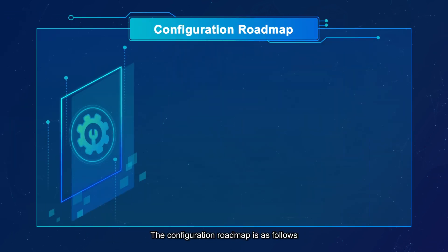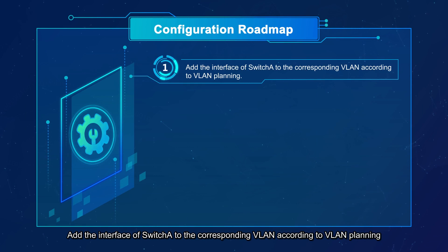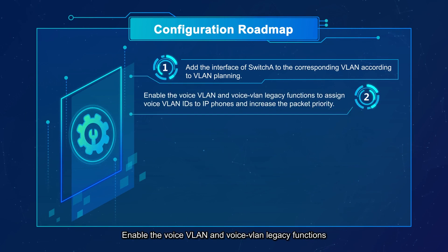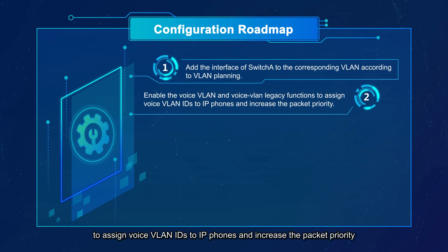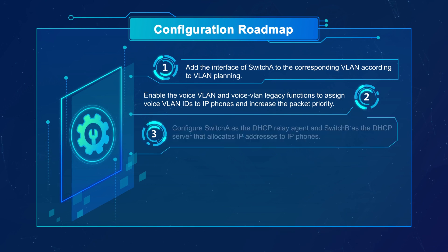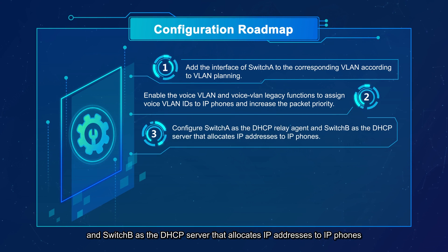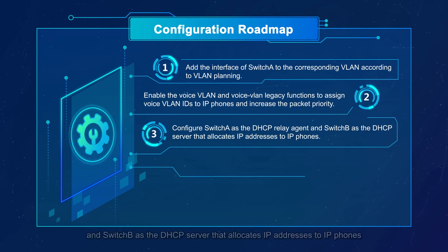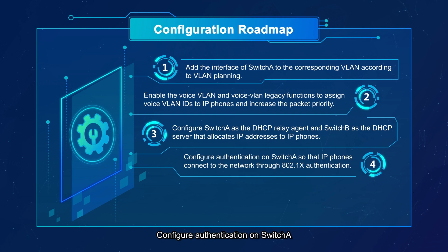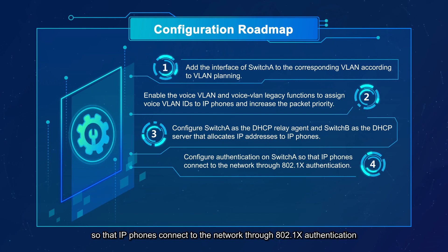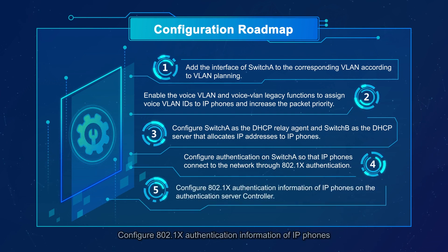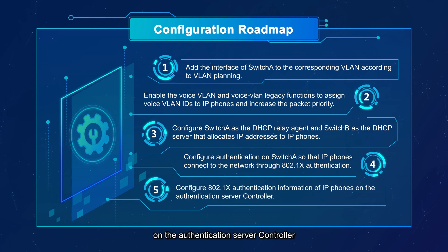The configuration roadmap is as follows: Add the interface of Switch A to the corresponding VLAN according to VLAN planning. Enable the voice VLAN and voice VLAN legacy functions to assign voice VLAN IDs to IP phones and increase the packet priority. Configure Switch A as the DHCP relay agent and Switch B as the DHCP server that allocates IP addresses to IP phones. Configure authentication on Switch A so that IP phones connect to the network through 802.1x authentication, and configure 802.1x authentication information of IP phones on the authentication server controller.